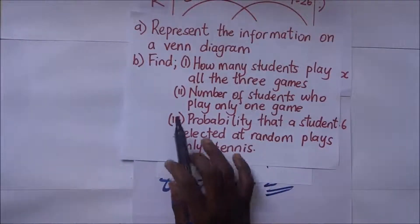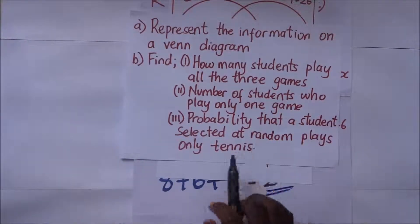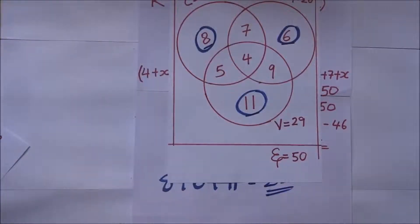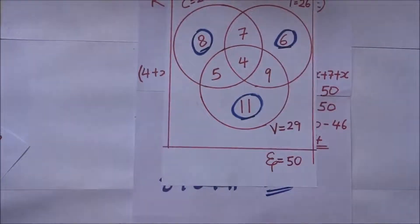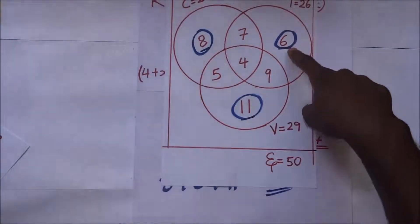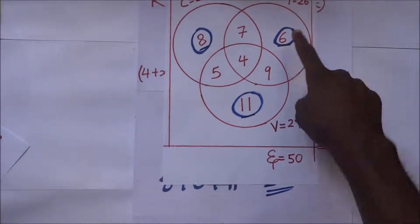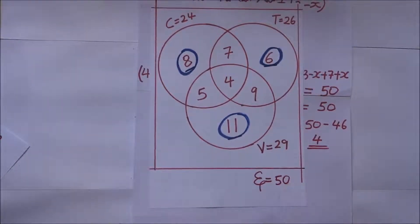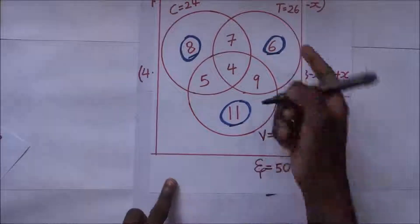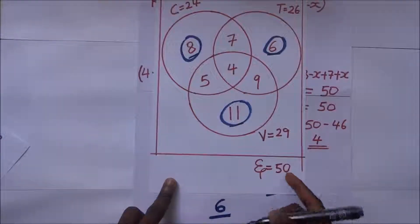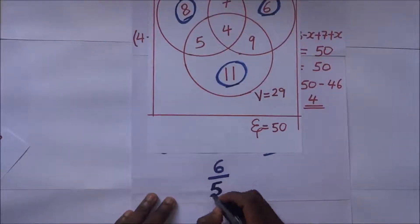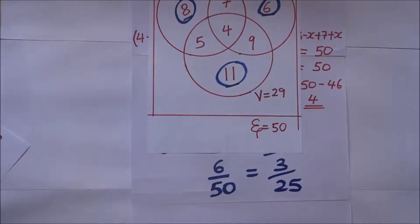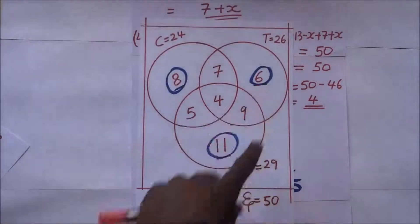For part four, we find the probability that a student selected at random plays only tennis. The number of students who play tennis only is 6. The probability equals the number of students who play tennis only divided by the total number of students: 6 over 50, which simplifies to 3 over 25.